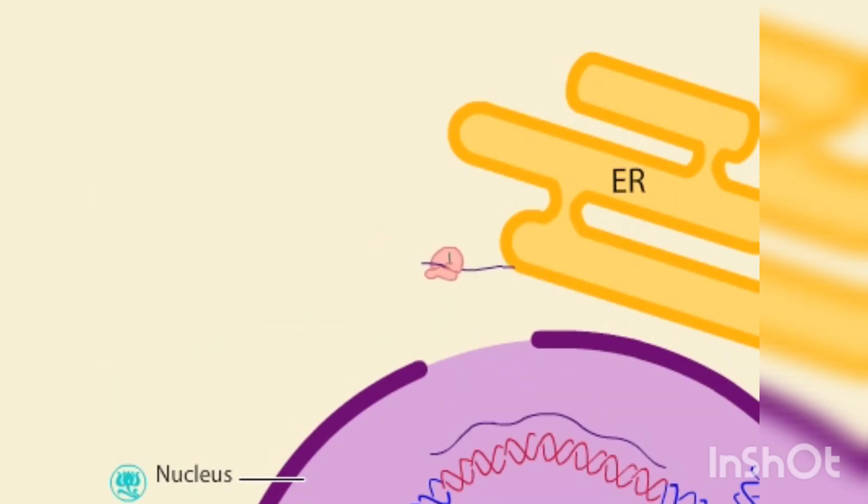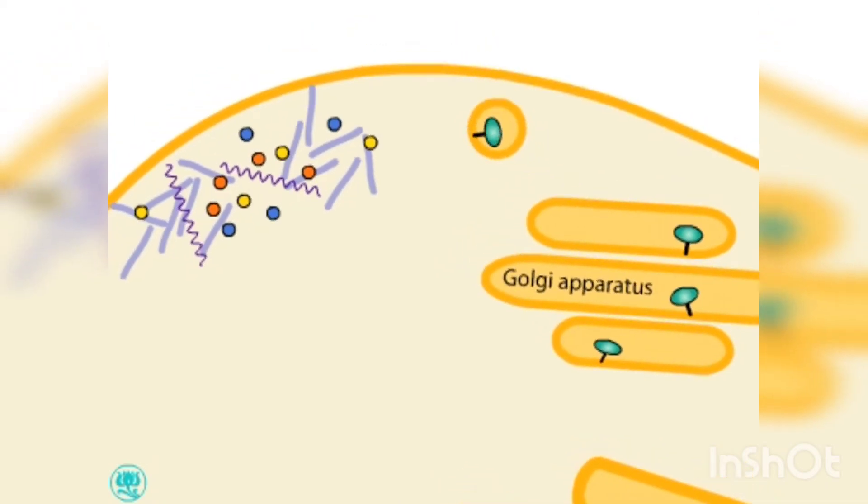Envelope proteins are produced in the rough endoplasmic reticulum, ER, and then move through the Golgi apparatus before arriving at the cell surface.